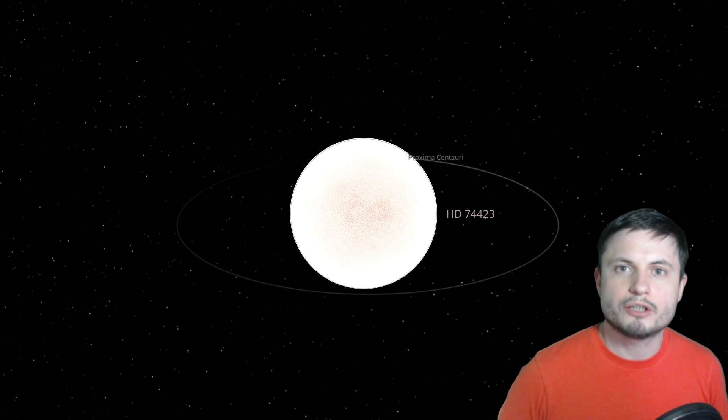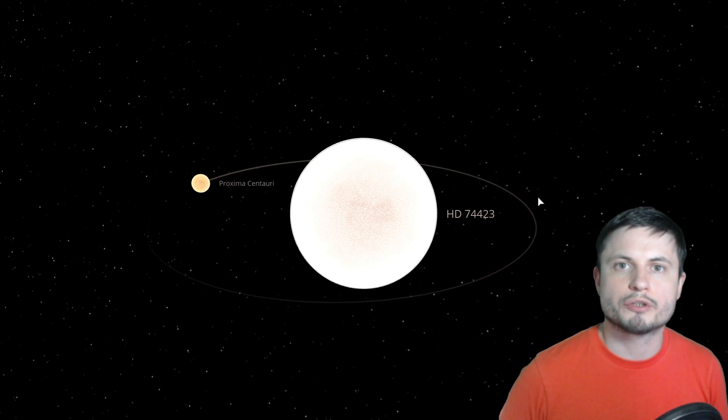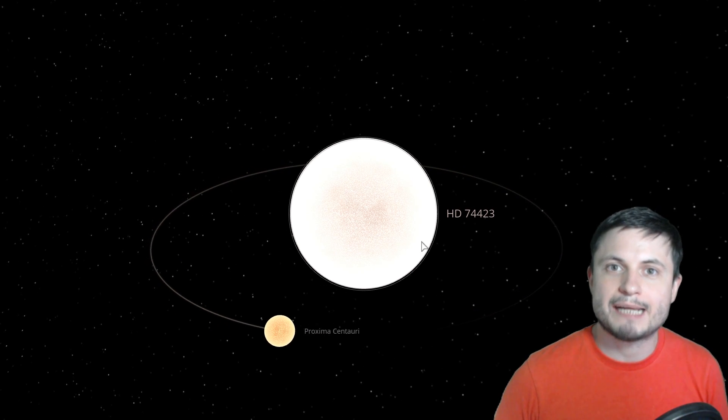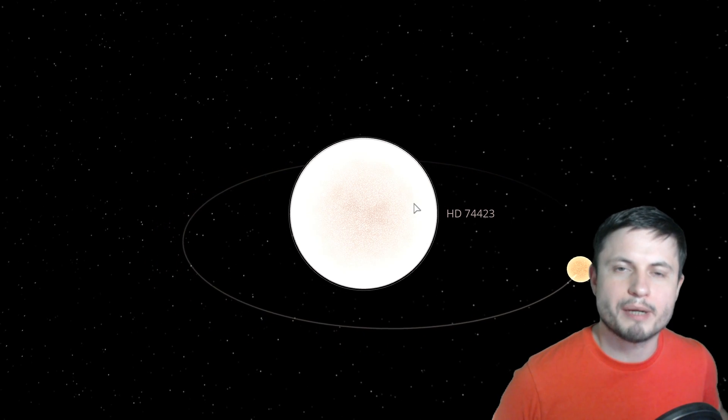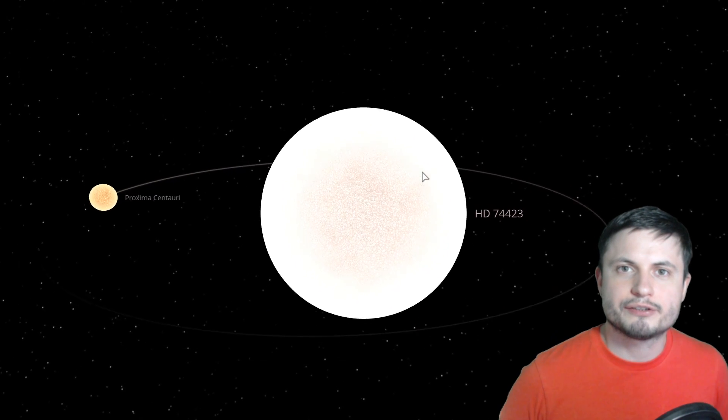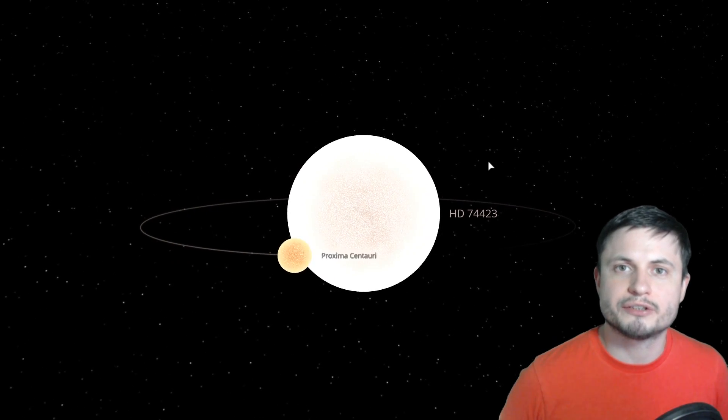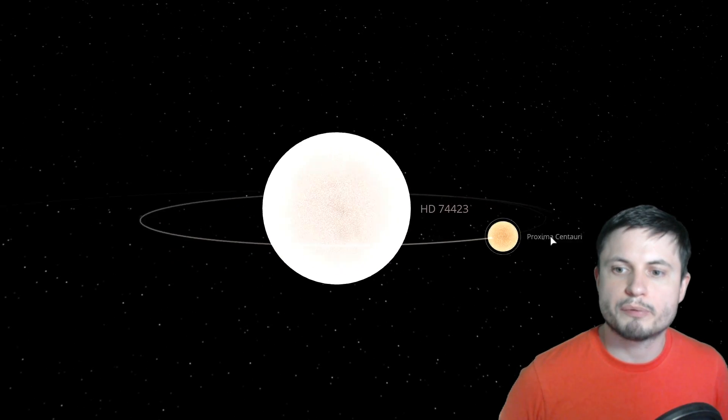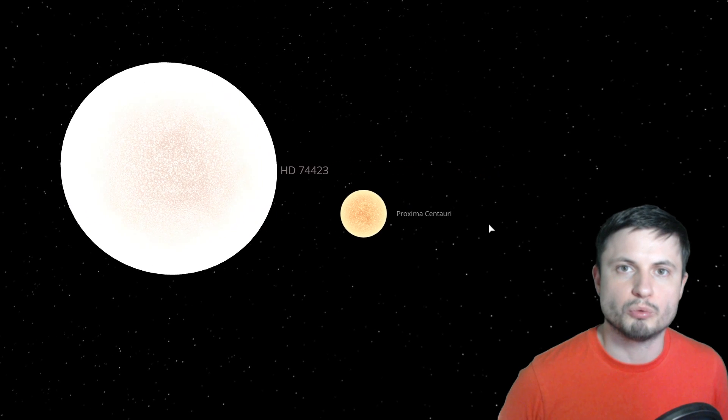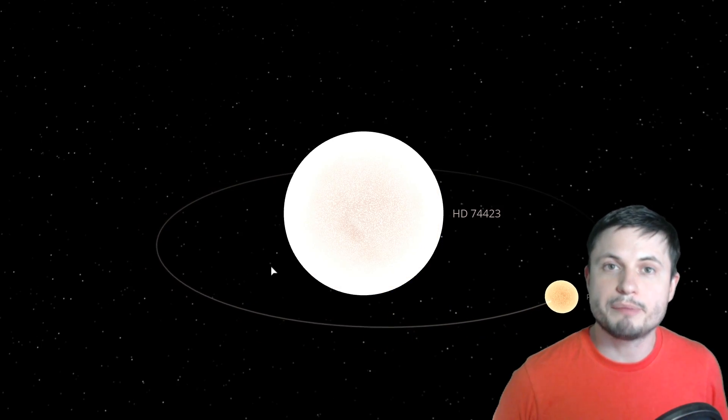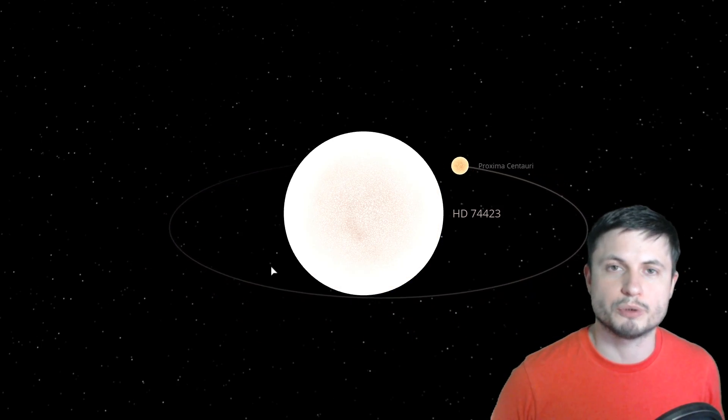And the larger star known as HD 74423 is approximately 1.7 times the mass of our sun. So it's a lot more massive it's also larger in size and this system is located approximately 1500 light years away from us. But the smaller partner here is just a typical red dwarf. And despite the system already being so strange there are other unusual phenomena here as well.